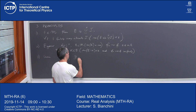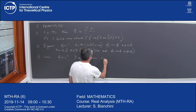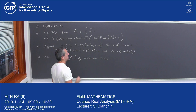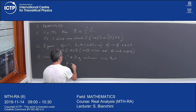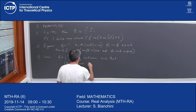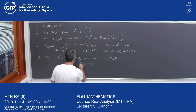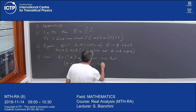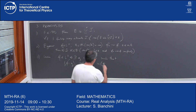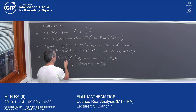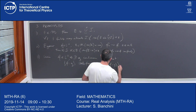There exists a function G which is continuous, such that the measure of the set where F does not equal G — specifically the measure of E minus that set — is less than epsilon. This is the statement of Lusin's theorem.